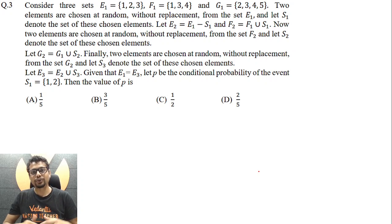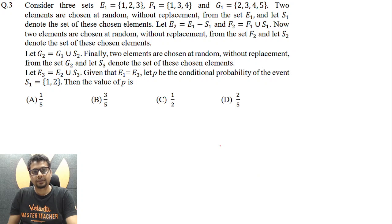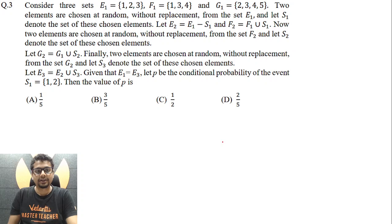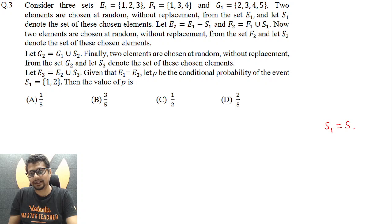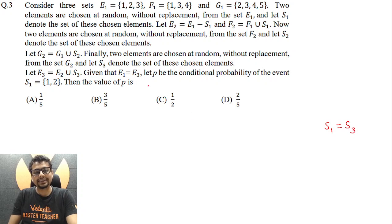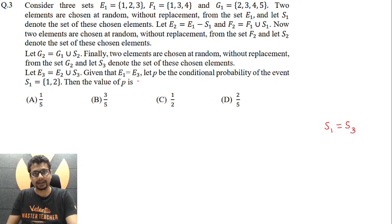You may pause the video to read the question carefully. The crux of this question essentially is that the set S1 should be the same as the set S3. It's because E1 is supposed to be equal to E3. E1 has three elements.